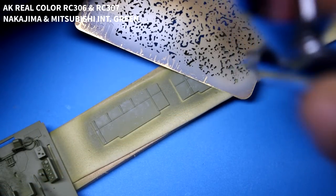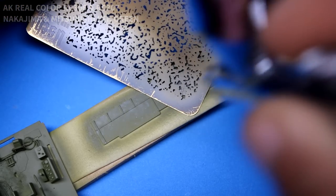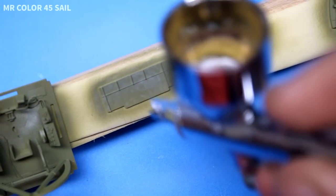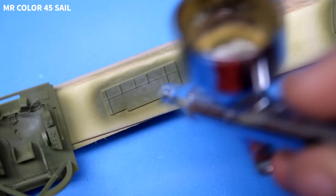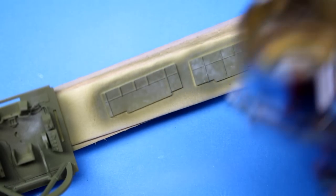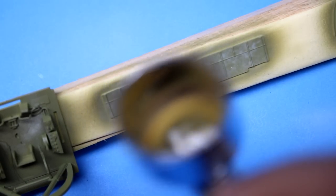In this kit, Hasegawa gives the options of doing the aluminum American test aircraft after it had been captured, or you can do it in the Japanese navy colors. And I wanted to do something in the middle ground. And I knew I also wanted to make it a little more interesting with a diorama.